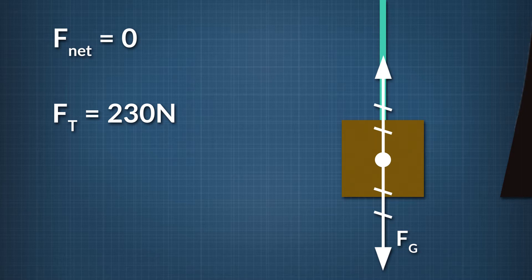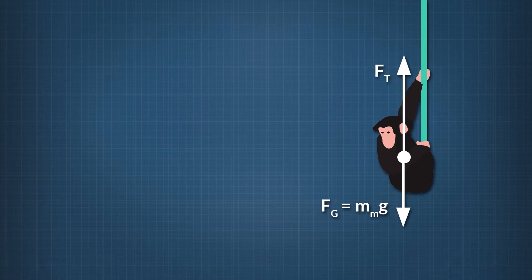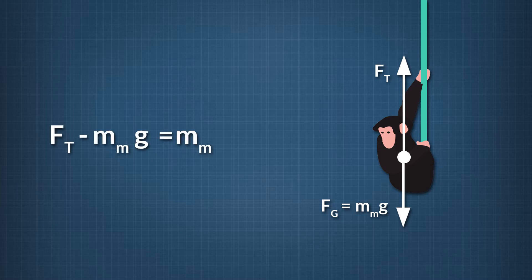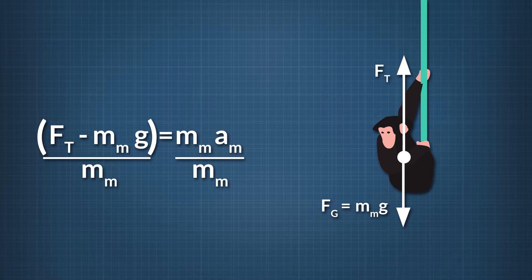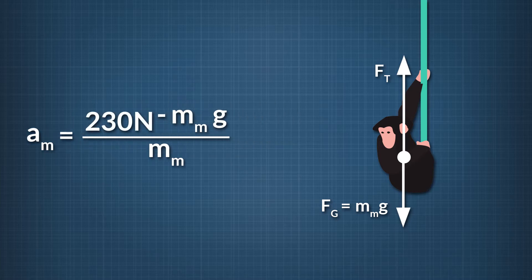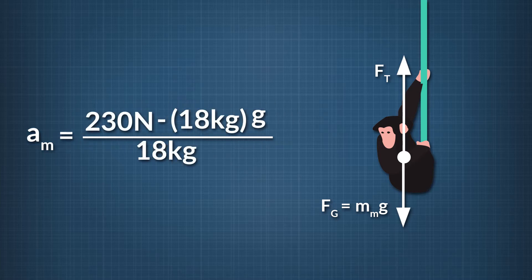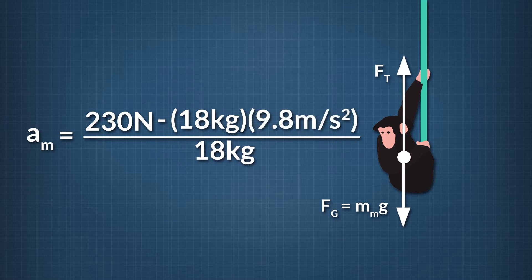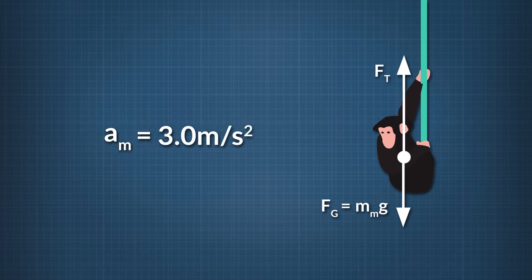Now let's switch back to the monkey's free-body diagram with the new tension force. By Newton's second law, with the positive direction upward, the tension force minus the monkey's weight equals the monkey's mass times its acceleration. Solving for the monkey's acceleration, we divide both sides by the monkey's mass. Plugging in 230 newtons for the tension force, 18 kilograms for the monkey's mass, and 9.8 meters per second squared for g, we find that the monkey's maximum acceleration without lifting up the crate is 3.0 meters per second squared.